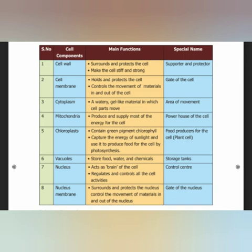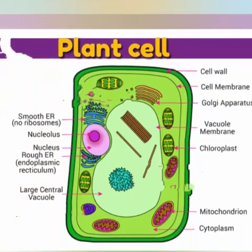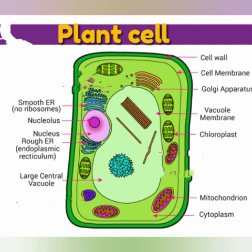Next is the nuclear membrane. This surrounds and protects the nucleus. It controls the movement of materials in and out of the nucleus. This is the gate of the nucleus. Now let's see the details of the plant cell diagram.